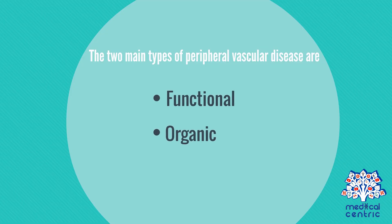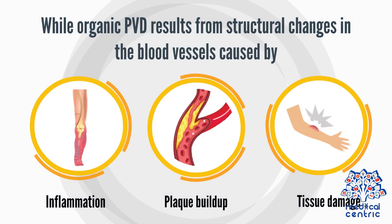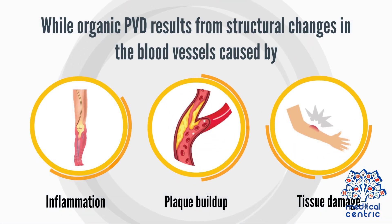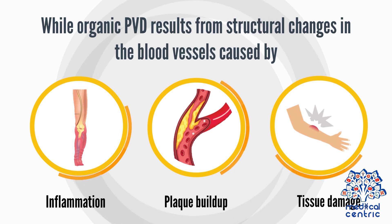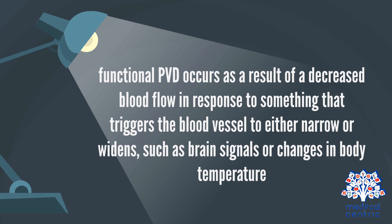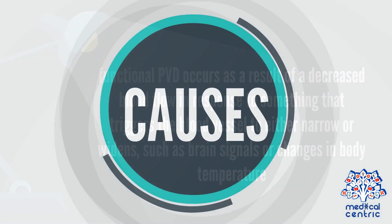The two main types of peripheral vascular disease are functional and organic. Organic PVD results from structural changes in the blood vessels caused by inflammation, plaque buildup, or tissue damage. Functional PVD occurs as a result of decreased blood flow in response to something that triggers the blood vessel to either narrow or widen, such as brain signals or changes in body temperature.